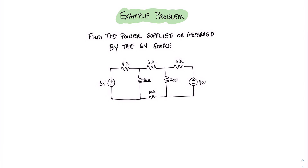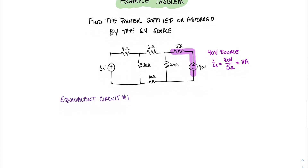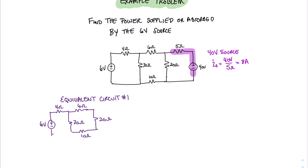We're going to do a source transformation on this 5-ohm resistor and this 40-volt source. For that 40-volt source, the source current I sub s equals 40 volts divided by 5 ohms, which equals 8 amps. Now let's draw our first equivalent circuit. Everything on the left remains the same: our 6-volt source, our 4-ohm resistor, our 30-ohm resistor, our 6-ohm resistor, our 20-ohm resistor, our 10-ohm resistor at the bottom. And now we have a 5-ohm resistor in parallel and our 8-amp current source.